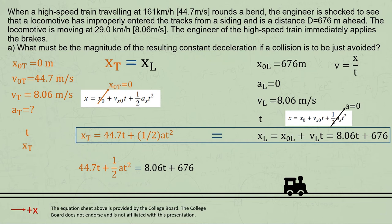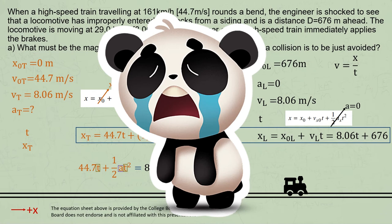Now it may look like we're almost there, but we have two unknowns, a and t, and only one equation. So this is unsolvable as it is.